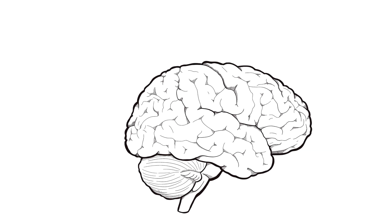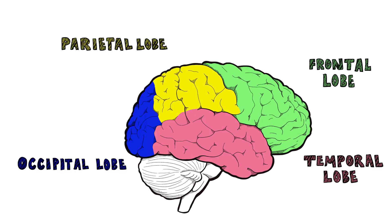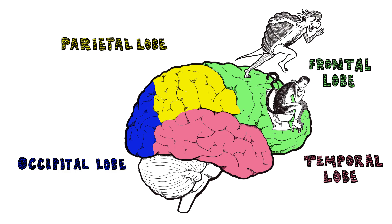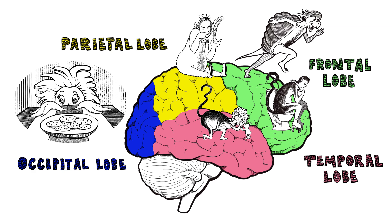The four lobes are the frontal, temporal, parietal, occipital. Movement and problem solving are handled by the frontal. The occipital processes vision, the parietal handles touch. The temporal lobe does hearing, memory, language — oh so much!